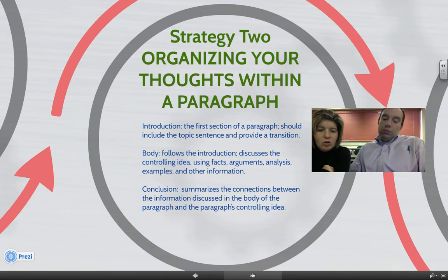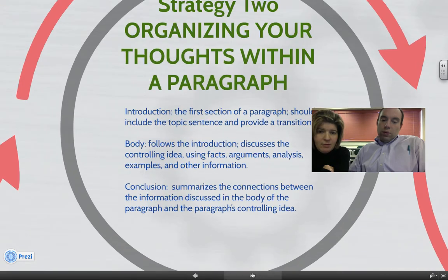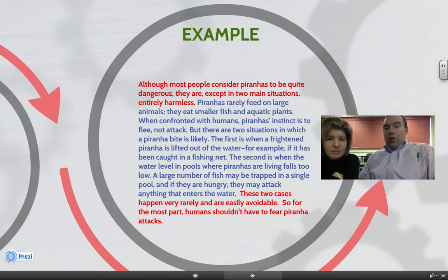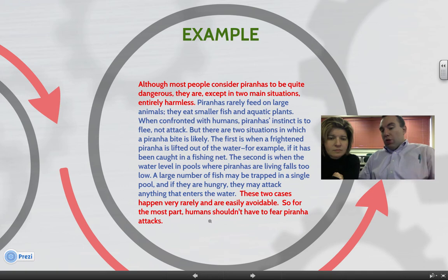In your conclusion, one brief sentence at the end of each paragraph summarizes the connection between the information discussed in the body and the controlling idea of the paragraph — that big main topic. Now let's take a look at a sample. You can see that we have put in red the topic sentence, and then the rest of the paragraph kind of follows along with that topic sentence. The concluding sentence, also in red, brings the whole issue back so that everything is wrapped up.